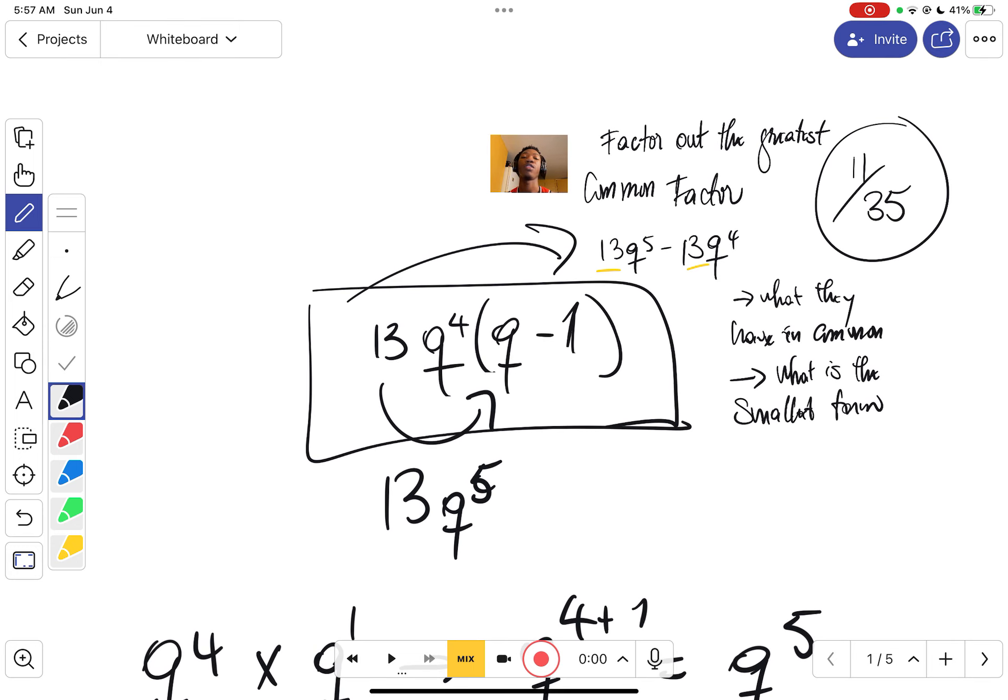We started with q^5 as well. You're going to keep our sign. 13q^4 by negative 1 is going to be negative 13q^4. Is that the problem that we started with? That's exactly the problem we started with. So 13q^4 times (q - 1) is the solution to our problem.